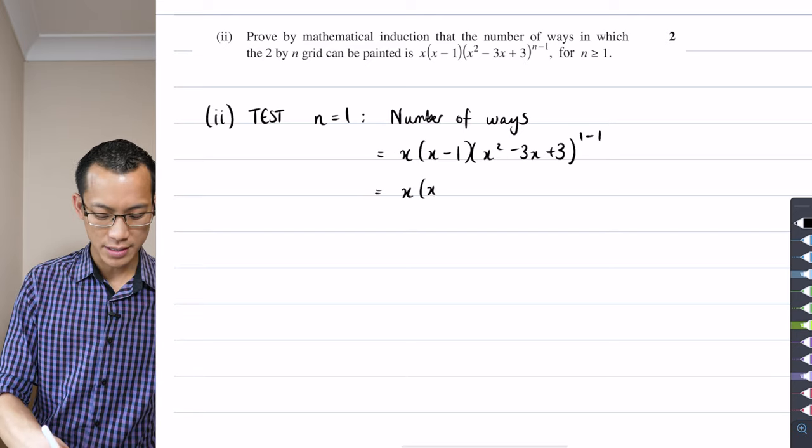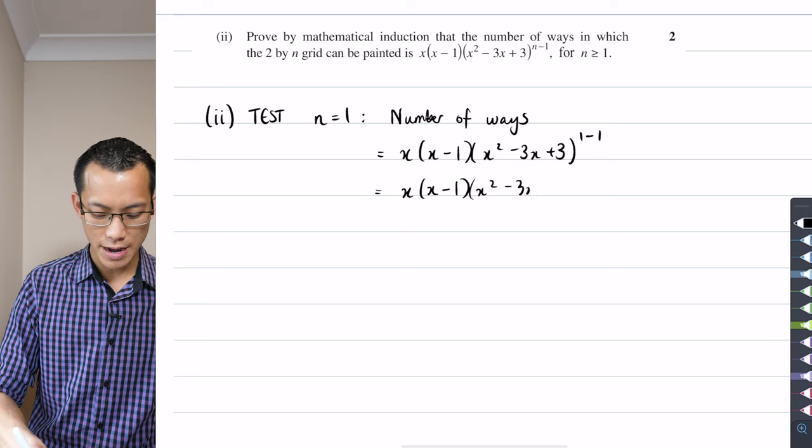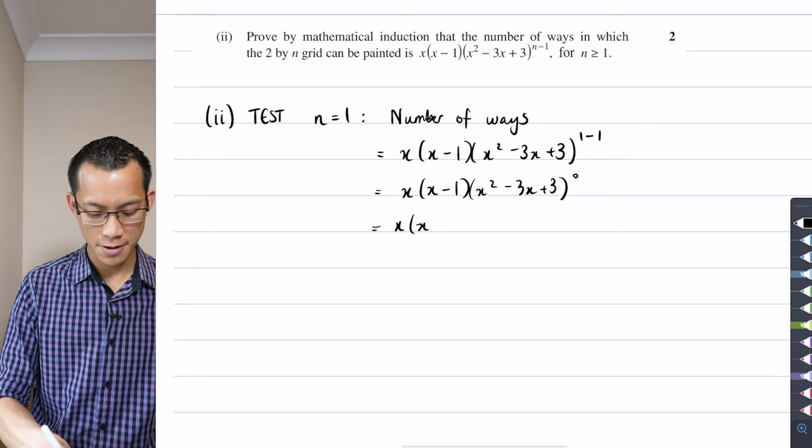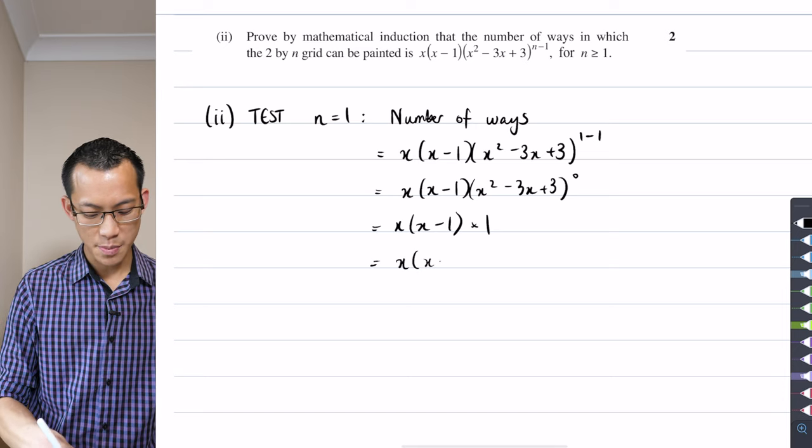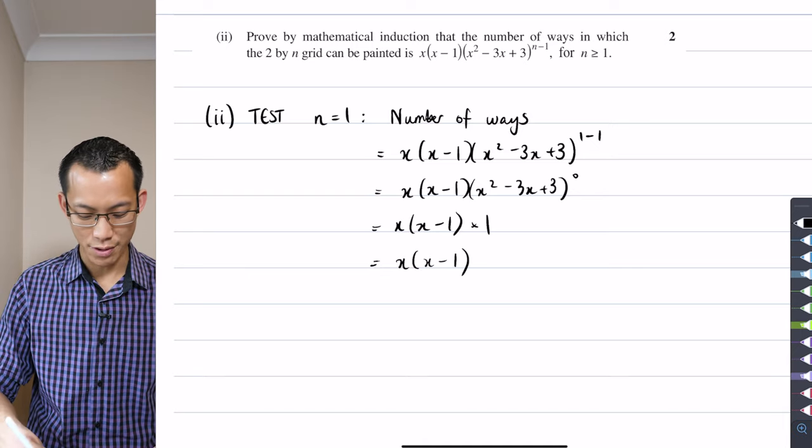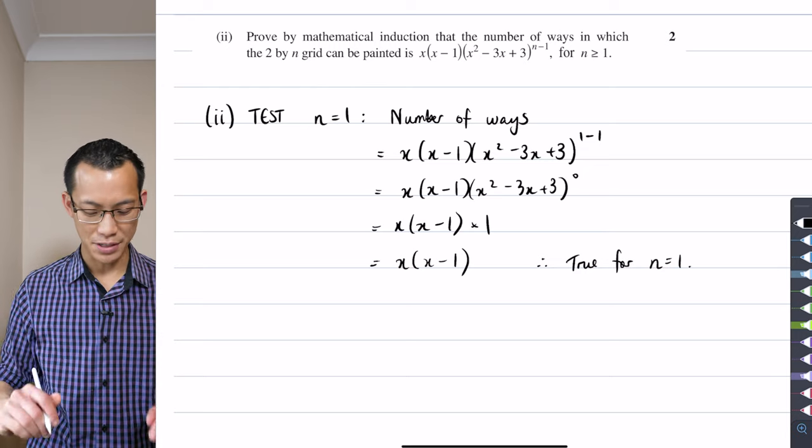You can see remember this is a proof so I'm not going to skip anything. I've still got x² - 3x + 3 but it's been raised to the power of 0 which is just equal to 1 and that is the x times (x-1) that they told us not to prove for choosing the colors of the first column. So I can just say therefore it's true for the base case n equals 1. Happy times.